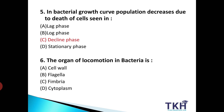Next, question number 6: the organ of locomotion in bacteria — किसी भी bacterial cell में locomotion और motility का organ कौन सा है? Option A: Cell wall. Option B: Flagella. Option C: Fimbriae. Option D: Cytoplasm. And the answer is Option B: Flagella. जिस भी bacterial cell में flagella present होगा, वो bacteria movement कर सकता है। अगर flagella नहीं होगा, तो bacteria non-motile होगा।